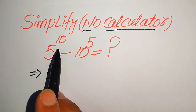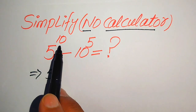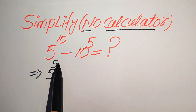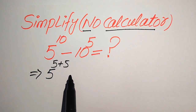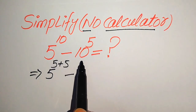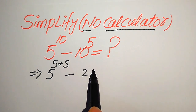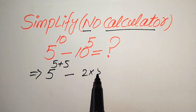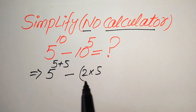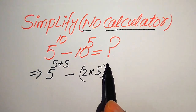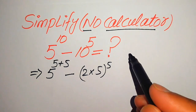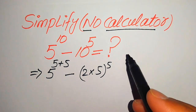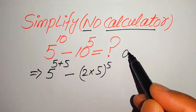We break the exponent 10 as 5 plus 5, and we break this 10 as 2 multiplied by 5, with its whole exponent being 5. For this we need to use two exponent laws.